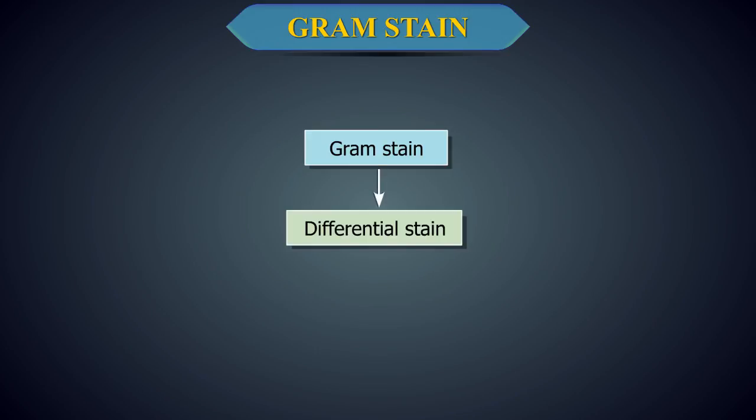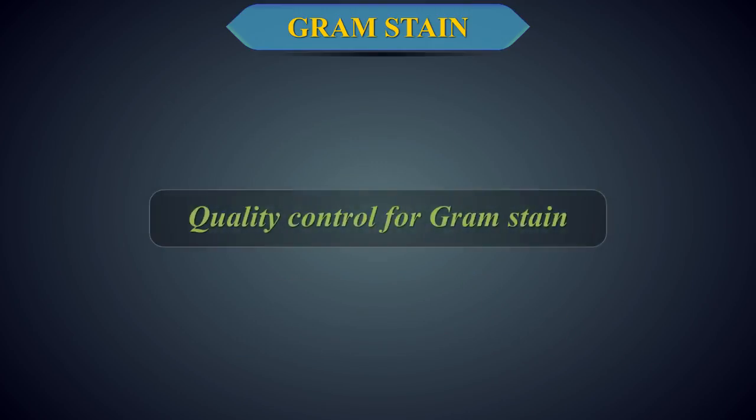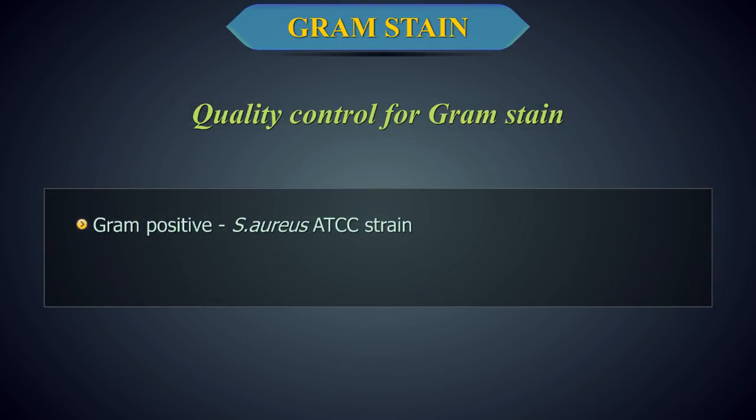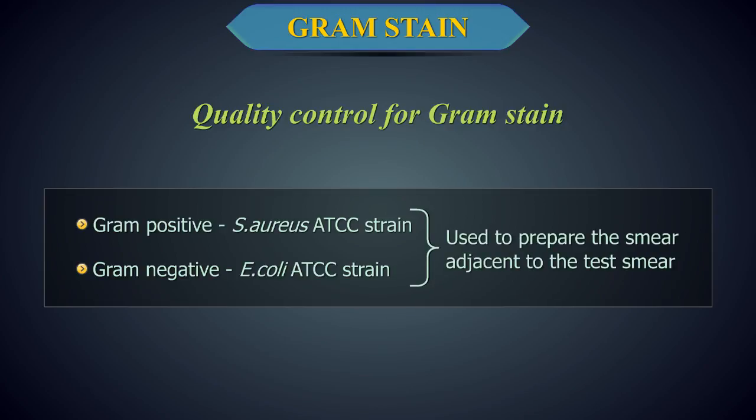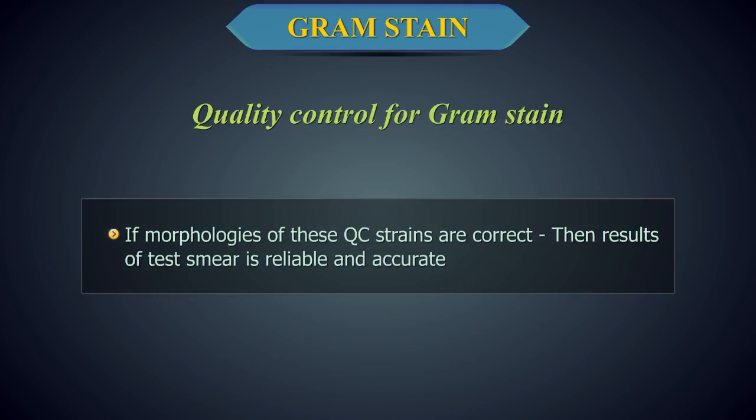Quality Control for Gram Stain. A good known gram-positive organism such as Staphylococcus aureus ATCC strain and gram-negative organism, for example Escherichia coli ATCC strain, are used to prepare the smear adjacent to the test smear on the same slide. If gram stain morphology of these quality control strains are correct, then the results of gram stain observation of test smear is reliable and accurate.